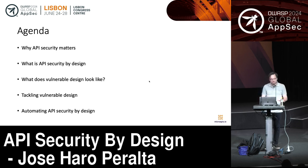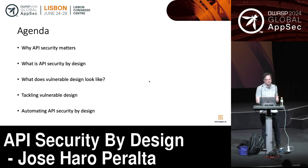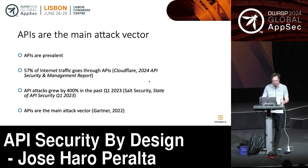The agenda for today: we'll briefly cover why API security matters, see an example of what vulnerable design looks like and how we could exploit it, then go through a catalog of design vulnerabilities I've been putting together over the past few months, see how we can exploit those vulnerabilities, and how we tackle this problem at scale with automation.